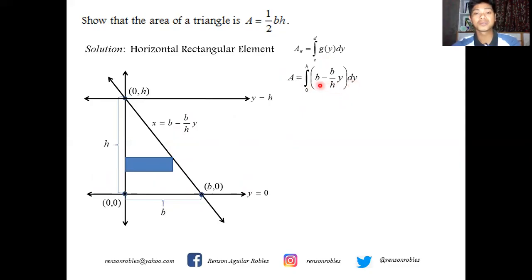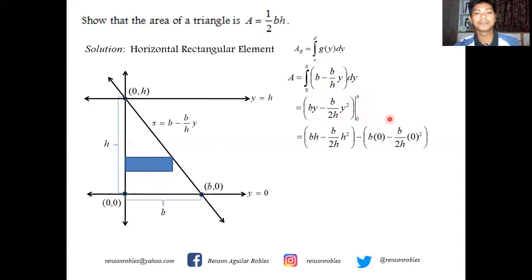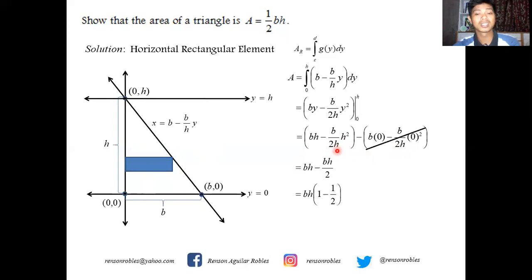Since we are integrating with respect to y, b and h are treated as constants. Integrating gives: by − (b/2h)y² evaluated from 0 to h. Replacing y with h: we get b·h − (b/2h)·h². Replacing y with 0 gives zero. Simplifying: h²/h cancels one h, leaving bh − bh/2. Factoring bh gives bh(1 − 1/2), and since 1 − 1/2 = 1/2, the area of a triangle is confirmed to equal one half times the product of the base and the height.